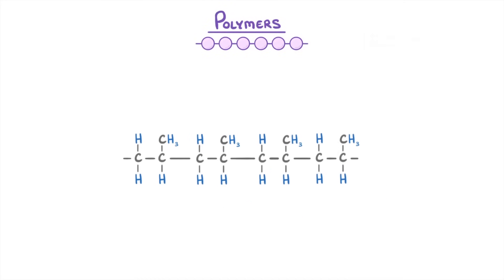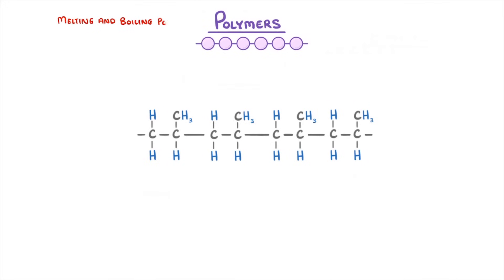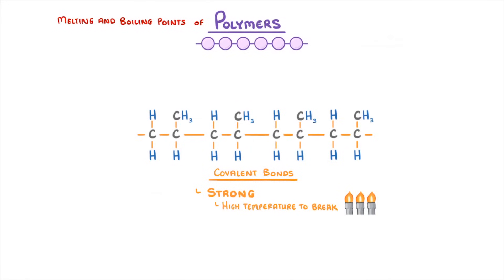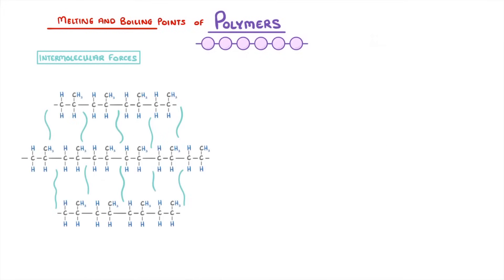The bonds within the polymers are all covalent bonds, which are really strong, and so would require really high temperatures to break. However, to melt or boil polymers, it's not actually these covalent bonds that we need to break. Instead it's the intermolecular forces between the separate polymer molecules, and these intermolecular forces are much weaker than covalent or ionic bonds.